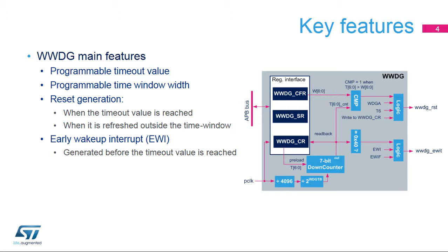It can generate an early wake-up interrupt when the down-counter reaches 0x40. This early wake-up interrupt can be used to reload the down-counter in order to avoid a reset generation, or to manage system recovery and context backup operations.